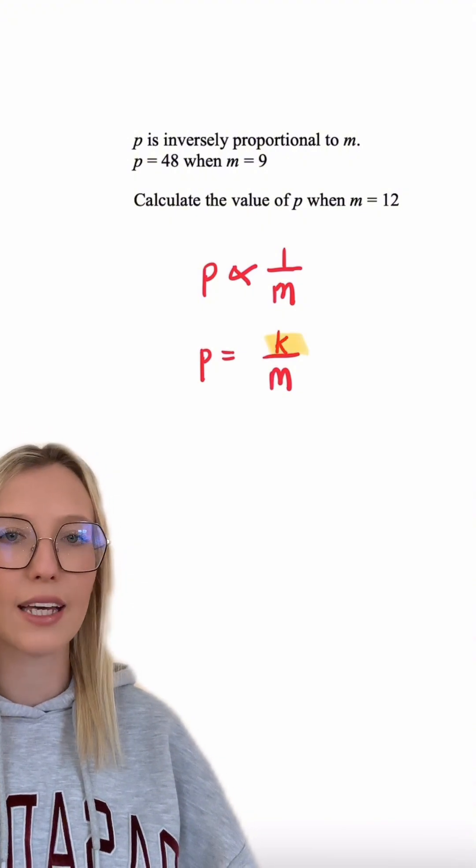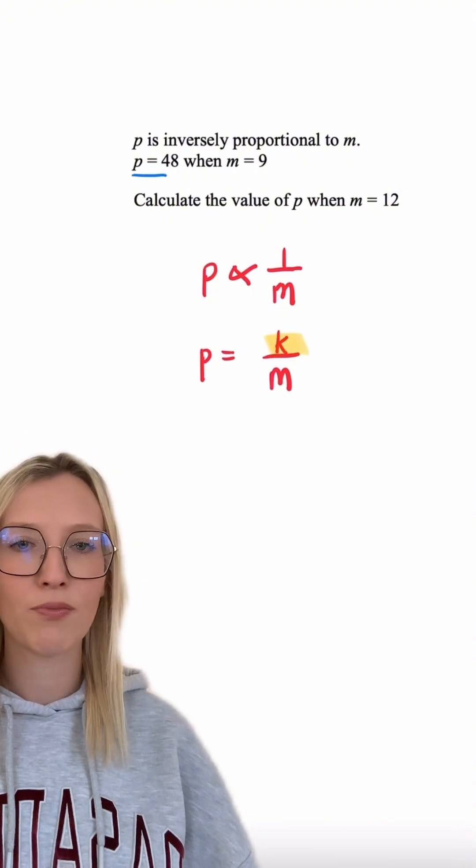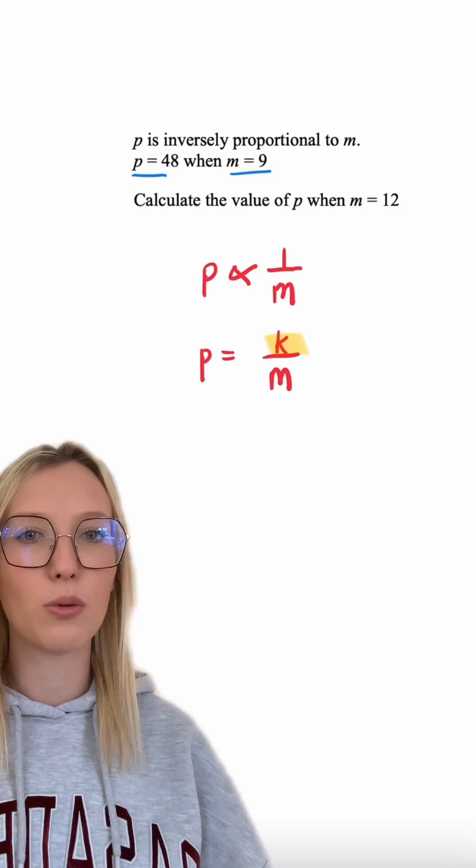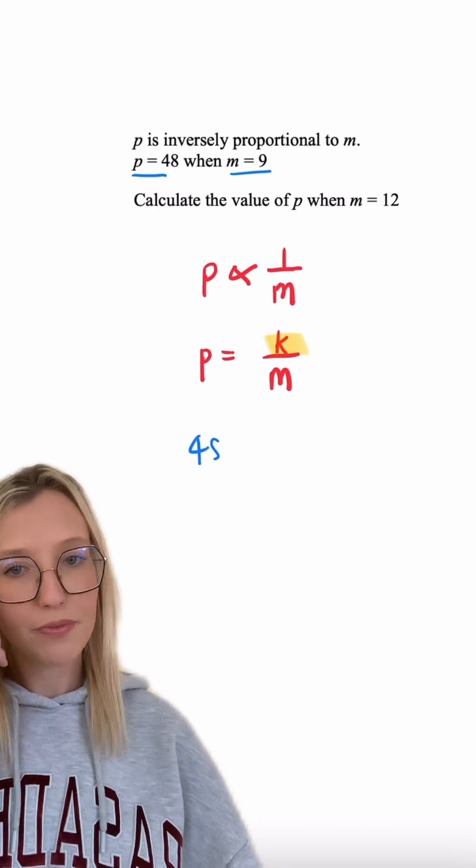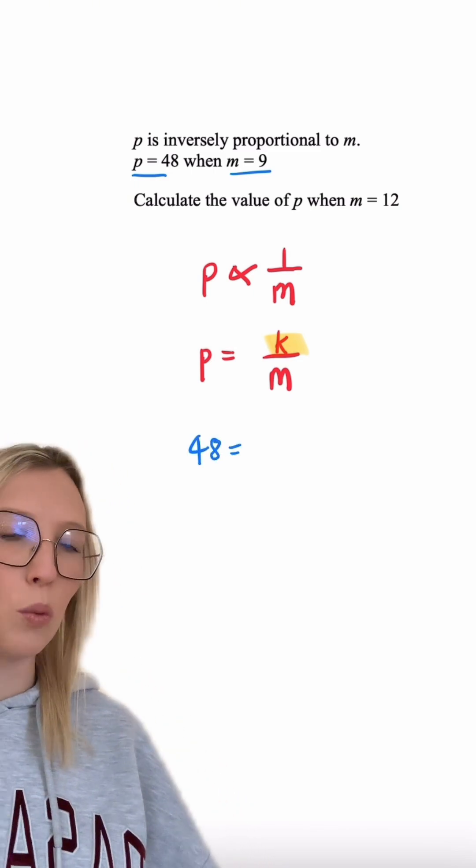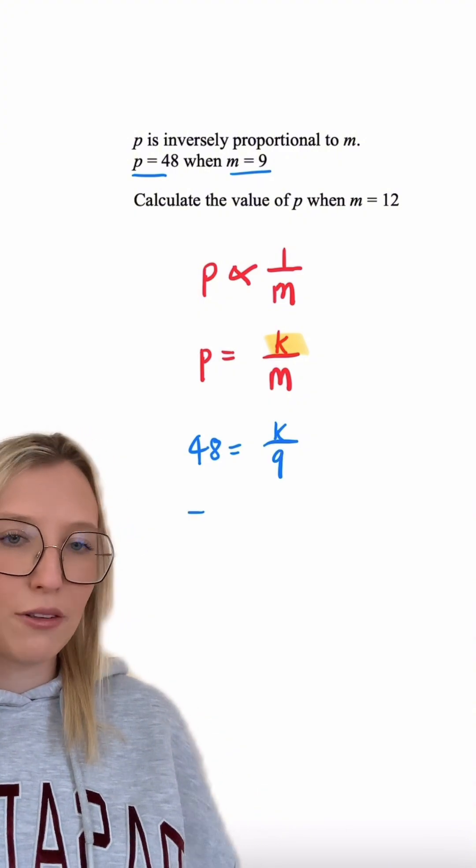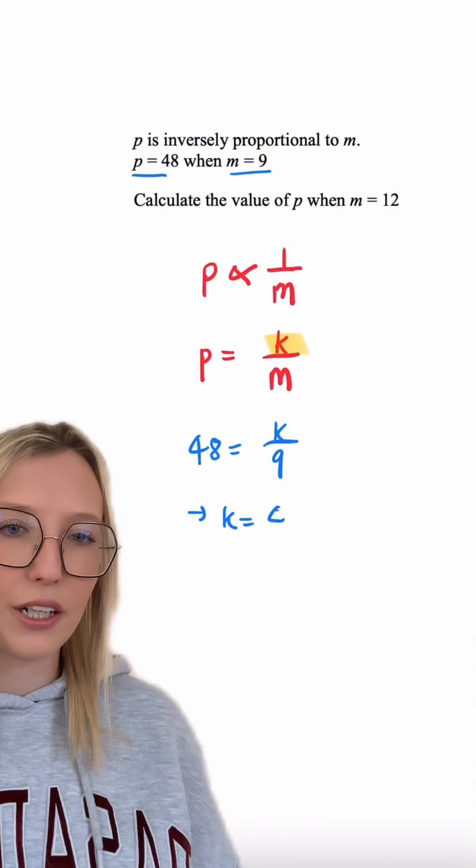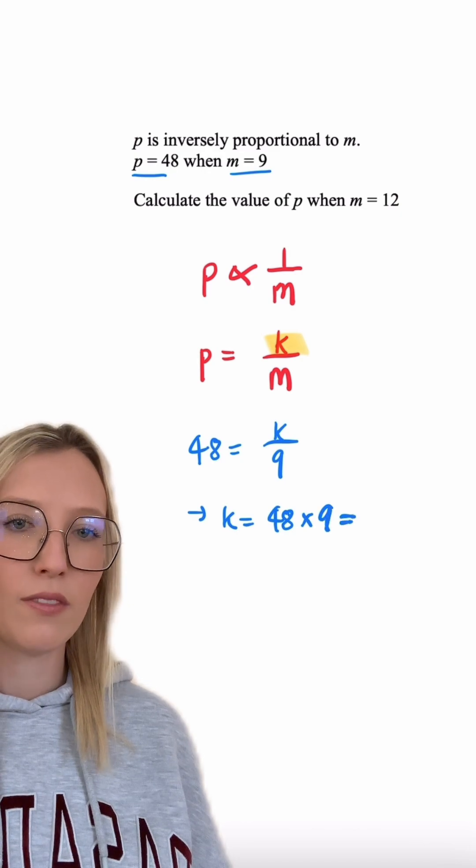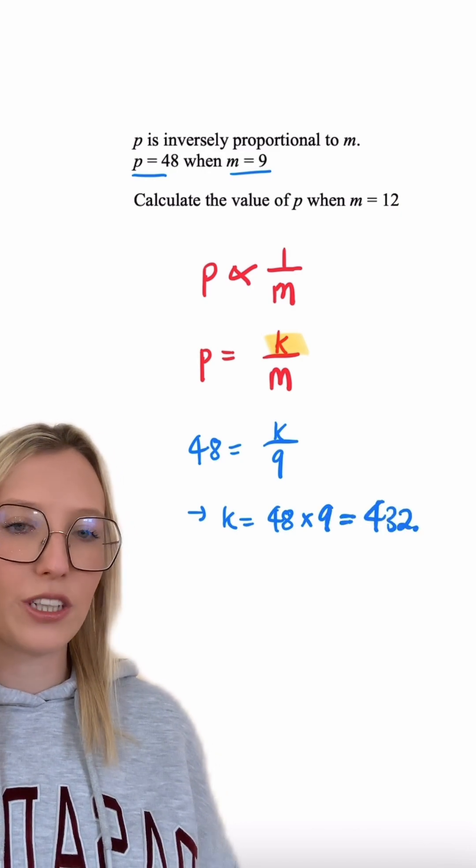We know P equals 48 when M equals 9, so we're going to have 48 equals K over 9. K then is just going to equal 48 times by 9, so we know that the value now of K is equal to 432.